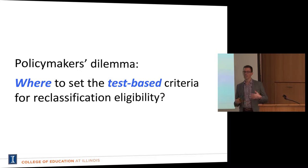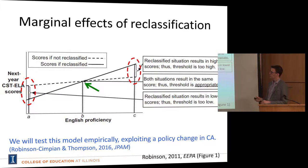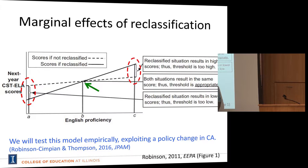The policymaker's dilemma is: where do they set the test-based criteria for reclassification eligibility, since it's going to have a profound effect on a student's likelihood of reclassification? In the 2011 paper, I laid out a way of thinking about how a policymaker might consider where to set the criteria. The argument was that policymakers want a smooth transition from the English learner setting to the reclassified fluent English proficient setting.